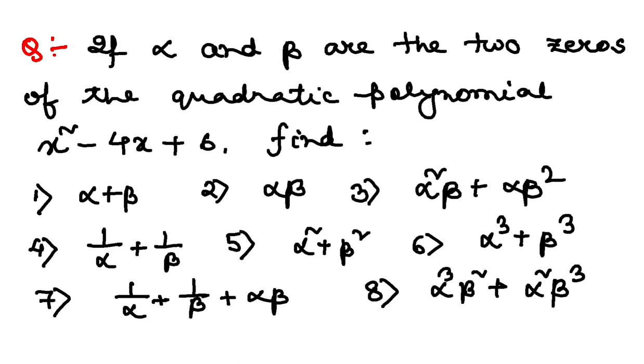If alpha and beta are the two zeros of the quadratic polynomial x square minus 4x plus 6, then find all these expressions. Okay. So, your quadratic polynomial is x square minus 4x plus 6.